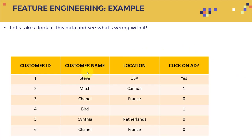Let's take a look at a feature engineering example. Assume you have data with: customer ID, customer name, location, and a target output — whether a customer clicked on an ad or not. For example, imagine you're a company that posted an ad on Facebook and collected data about customers. If a customer clicked the ad, the value is 1; if not, it's 0. That's the data you've collected and want to clean up through feature engineering.